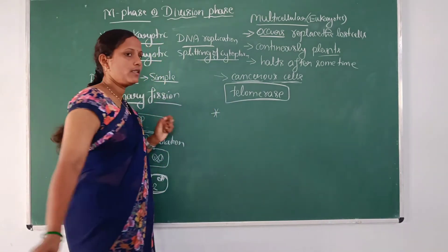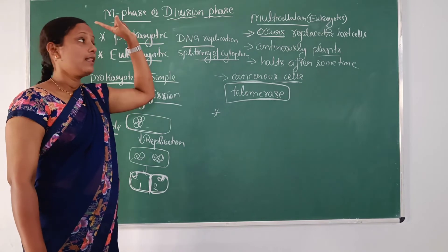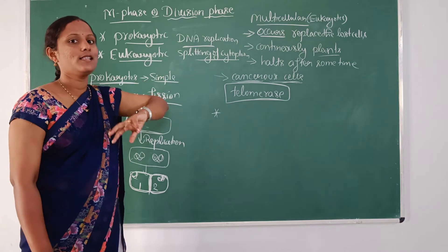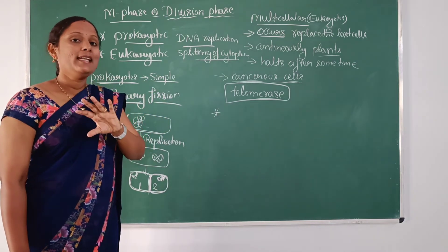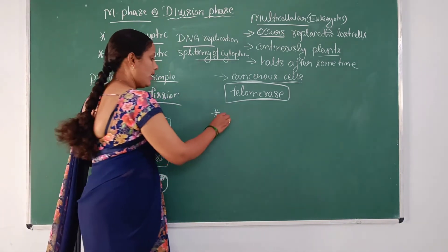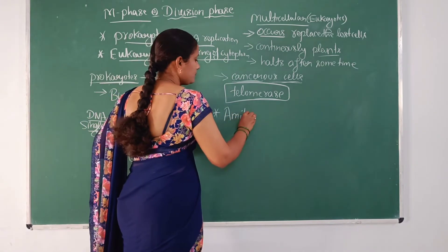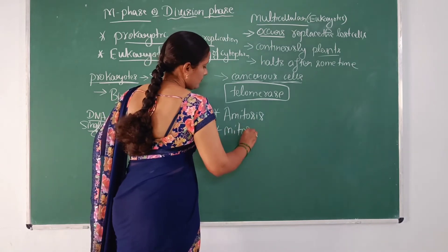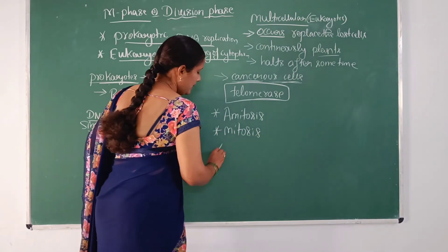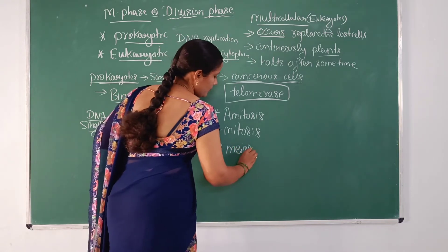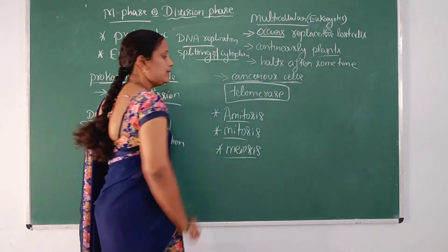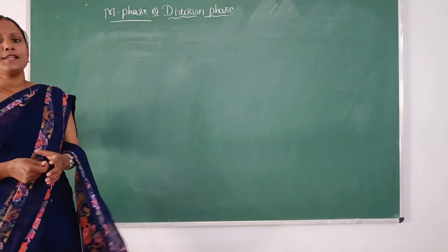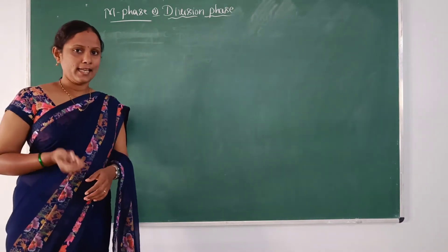We are discussing the M phase, which we also call the division phase. The division of cells occurs by mainly three methods. They are amitosis, mitosis, and meiosis. These are the three types of cell division.